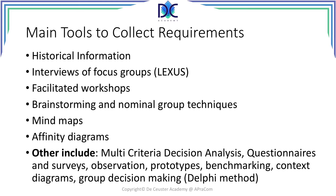A very important element that we can build up once we start doing projects is historical information. Historical information relates to all the projects that we have done before, and we may find some interesting elements there. We can also conduct interviews with focus groups — like we saw in the lecture case, some people were interviewed and based on those interviews the requirements were defined. We also have facilitated workshops, where we bring people together with a facilitator to gather all the requirements.